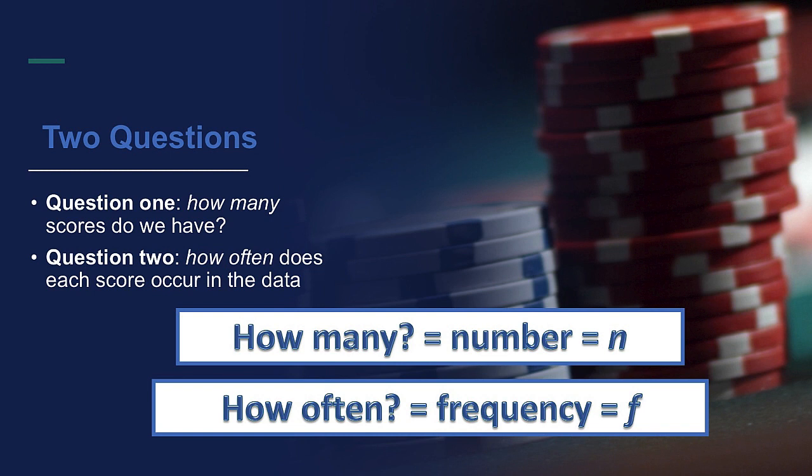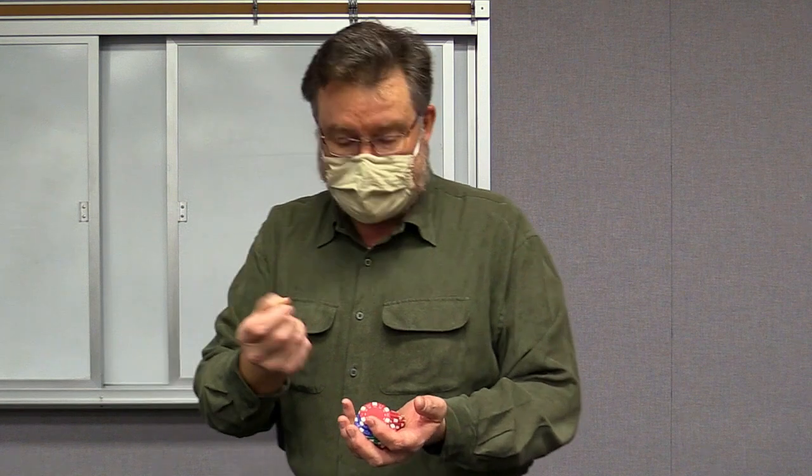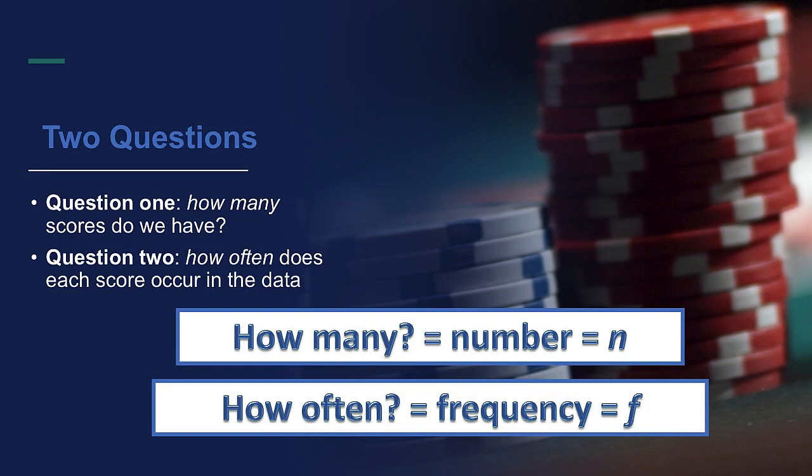When we have data, there are generally two questions that we want to answer. Let's say that one day I showed up at your office, and for no good reason other than just to illustrate this concept, I took my bag and I dumped out on your desktop a bunch of poker chips. So I have these poker chips and they're now just laying on your desktop. You might have two questions. How many poker chips are on your desktop? How many do we have? And you'll probably also want to know how many of them are blue, how many of them are red, how many of them are green. So our two questions: How many, that is the total number of poker chips that we have in our distribution. The how often is the frequency, how often does each color occur in our distribution.